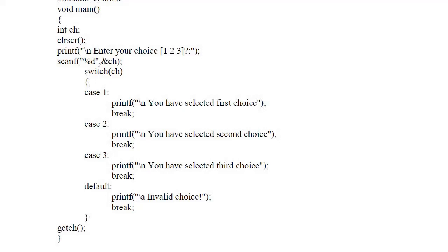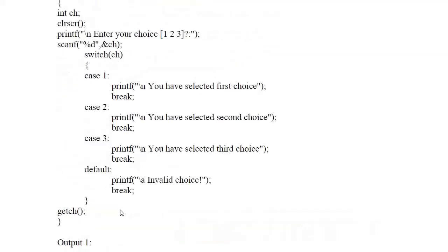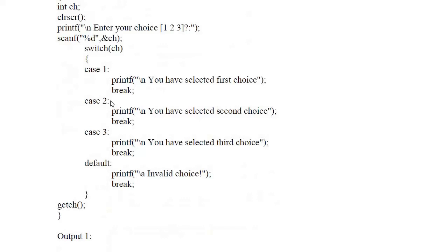Switch, case, and default are keywords; a colon is used after each case value; you can use multiple instructions; all statements end with semicolons; and a semicolon does not come after the switch itself. To write this program we define one integer variable CH, read the choice, pass it, and the program works accordingly. Sample output: enter your choice — if you enter one, 'you have selected first choice'; if two, 'you have selected second choice'; if five, 'invalid choice'.